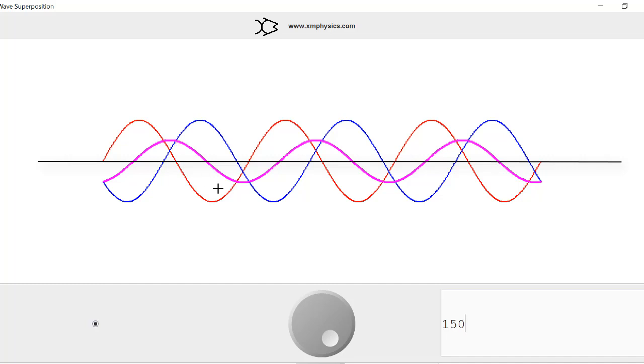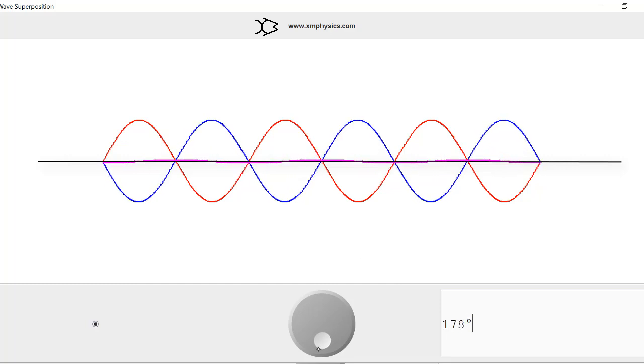To get a complete destructive interference, we need the phase difference between them to be 180 degrees. So now they are completely opposite. We say that these two waves are in antiphase. So when two waves in antiphase superpose, we get destructive interference.